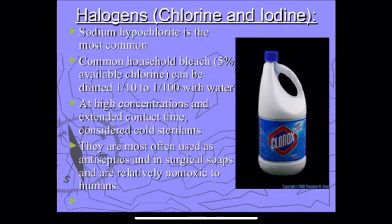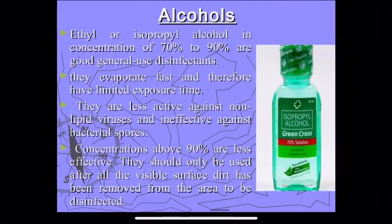Common household bleach at 5% concentration is also a chemical disinfectant. Alcohol-based sanitizers — isopropyl alcohol — are chemical disinfectants used for hand hygiene. The alcohol concentration should be 70% to 90%; when you sanitize, confirm the alcohol concentration is more than 70%.